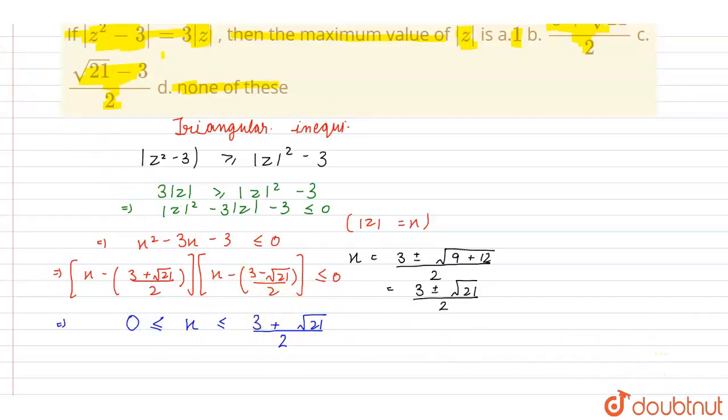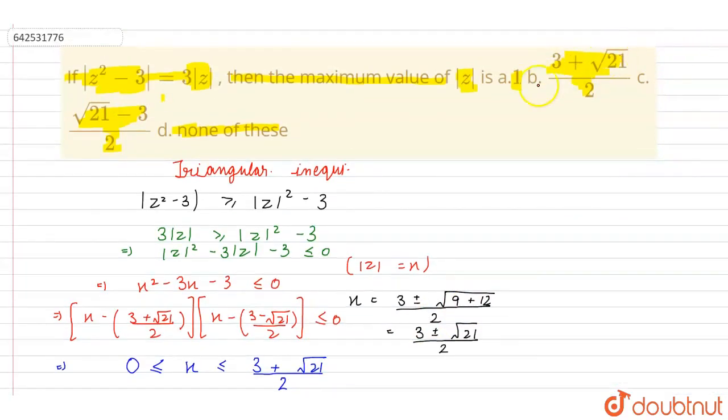From here, we can see that the maximum value of x, that is mod z, is 3 plus under root of 21 upon 2. Therefore, the correct option here will be 3 plus under root of 21 upon 2.